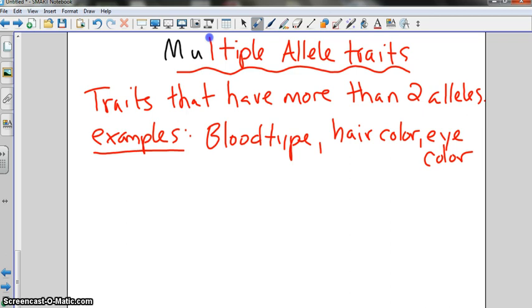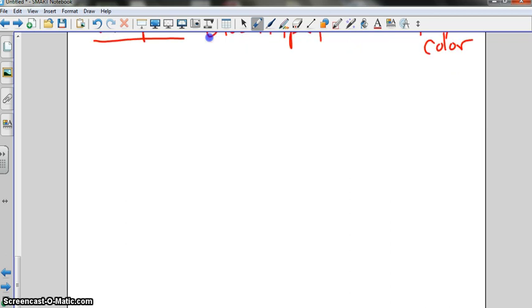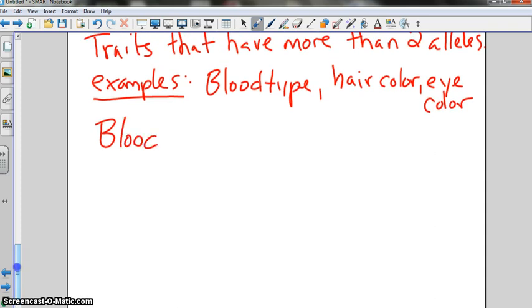So, the example we're going to use is blood type in humans. And what did we say the other day were the alleles for blood type? A. There was type A, B, and O. And we said another way to represent those was using the I's.